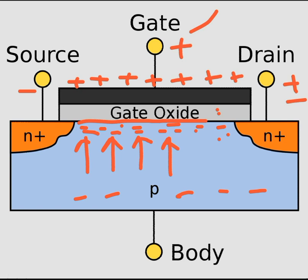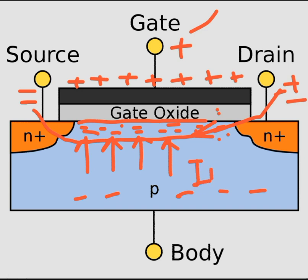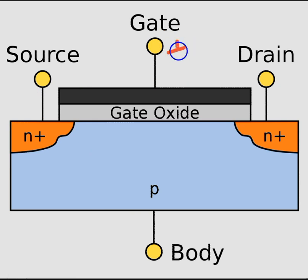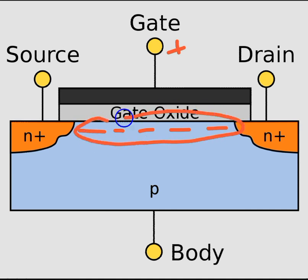Once there are sufficient negative charge carriers at the oxide-semiconductor interface, you can apply an electric field across the drain and source regions. A positive voltage pushes the electrons and the negative pulls them, so the circuit is completed and current flows from drain to source. When you remove the gate voltage, current conduction stops. Reapplying the gate voltage restarts current flow, provided a voltage is applied across drain and source. In this way, the voltage at the gate controls the current in the channel — this region is called the channel of the FET.